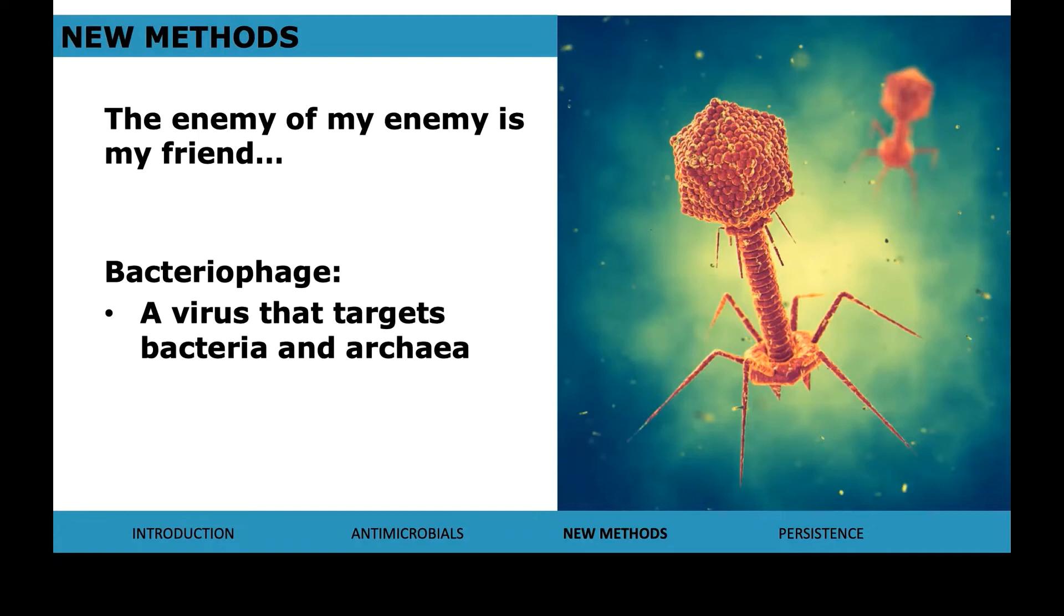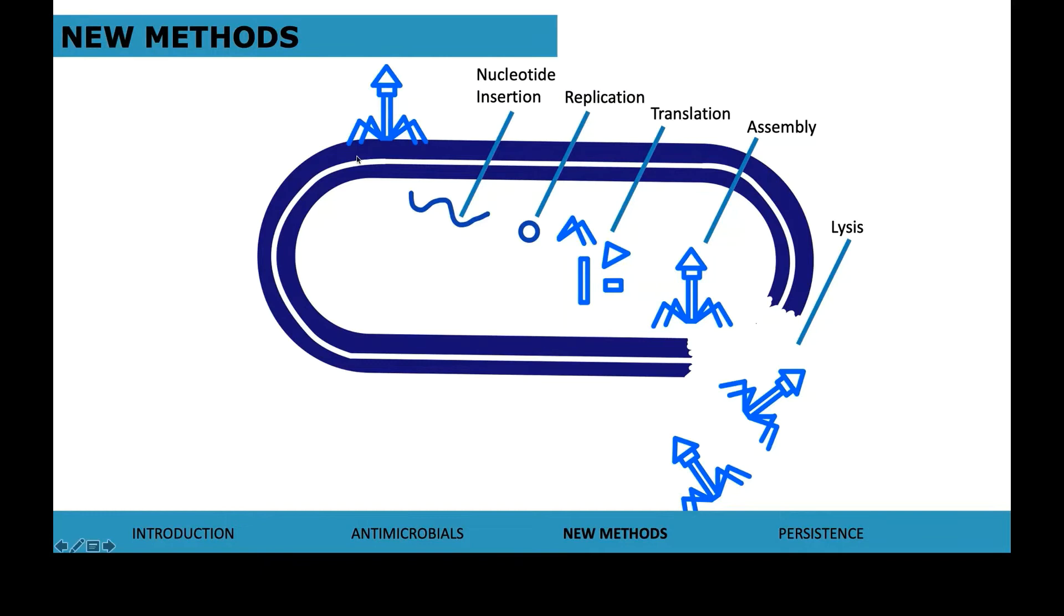So how do bacteriophages actually work? If this is our bacteriophage, it can bind to the bacterial cell. It will then insert its little genetic sequence. This could be RNA or DNA. This is then replicated by the cell and translated into the proteins that constitute this bacteriophage. It's then reassembled. And if this is repeated over a large number of times, these reassembled bacteriophages burst out of the cell and cause cell lysis and spread to neighbouring cells. This is a pretty neat mechanism. It's so specific to the cell and it can completely stop an antibiotic resistant infection in its tracks.